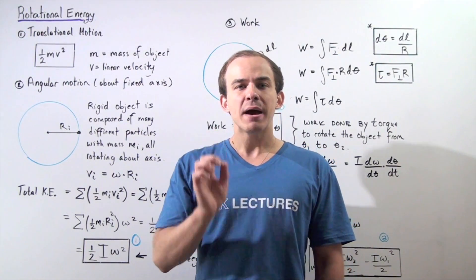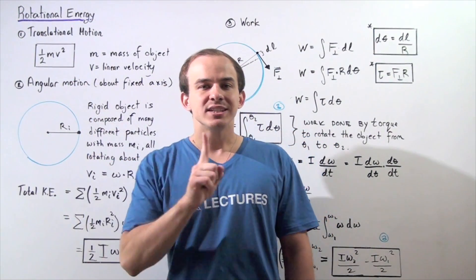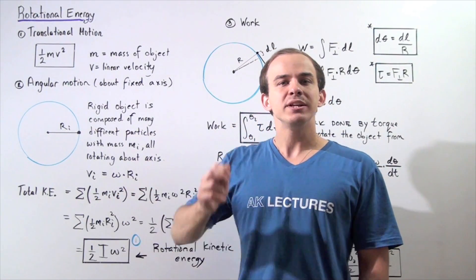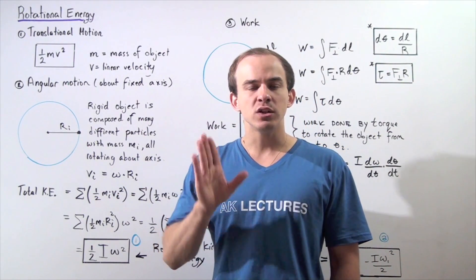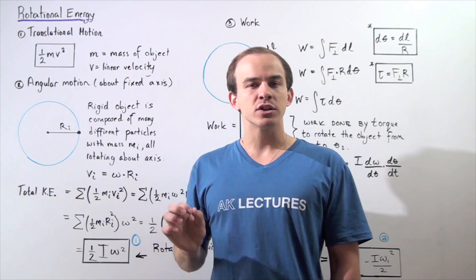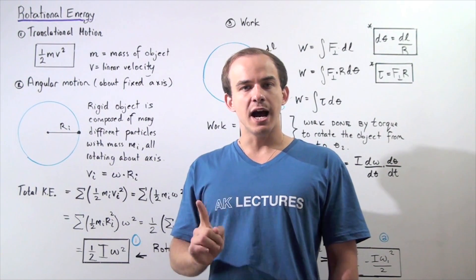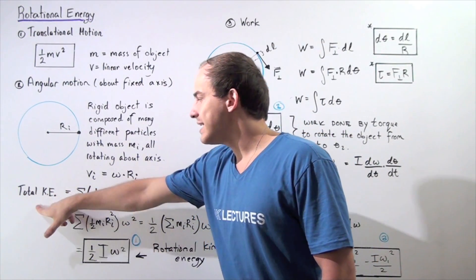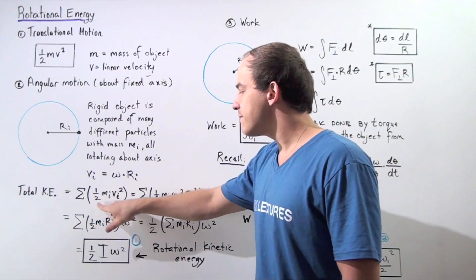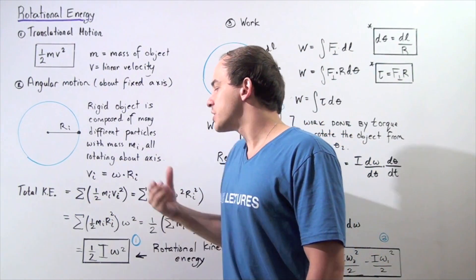That's the kinetic energy of that single individual tiny particle. To calculate the total kinetic energy of the entire object, I simply sum up the individual kinetic energies of every single tiny particle with mass mi and linear velocity vi. So the total kinetic energy is equal to the sum of one-half mi vi squared.